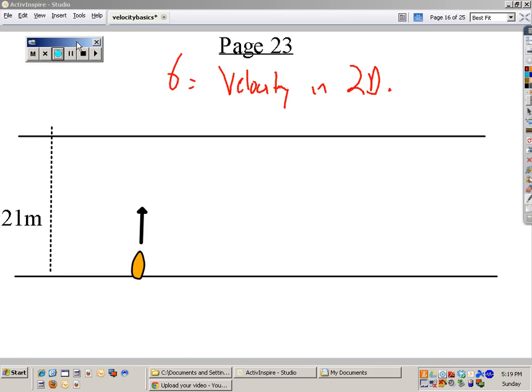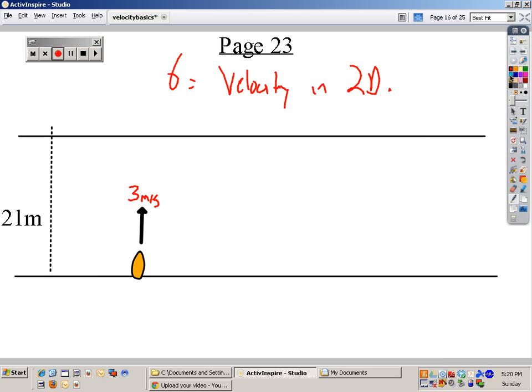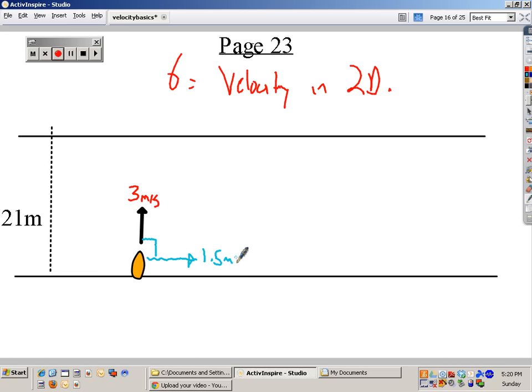Okay, this is velocity in two dimensions. What that means is we're going to have, let's say a boat, and this will be a river. Say the boat is traveling across the river at 3 meters per second. And we'll also say that at a perfect right angle, the creek will be pushing the boat at 1.5 meters per second this way.